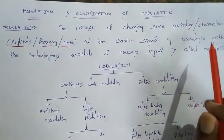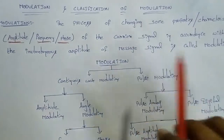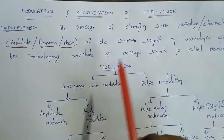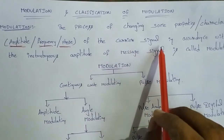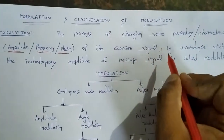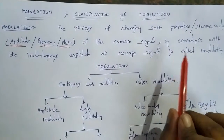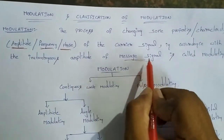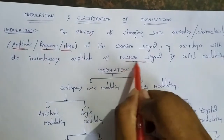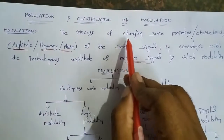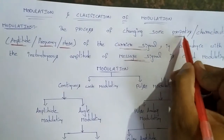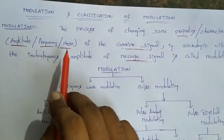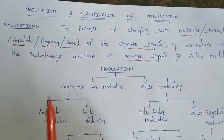The definition of Modulation: the process of changing properties or characteristics of a carrier signal in accordance with the instantaneous amplitude of the message signal. The carrier signal properties — amplitude, frequency and phase — will change. So we call it Modulation.